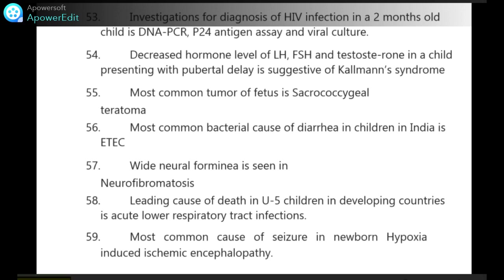First clinical intervention in a neonate with congenital diaphragmatic hernia is to insert a nasogastric tube. Investigations for diagnosis of HIV infection in a 2-month-old child are DNA PCR, P24 antigen assay and viral culture. Decreased LH, FSH and testosterone in a child with pubertal delay is suggestive of Kallmann's syndrome.